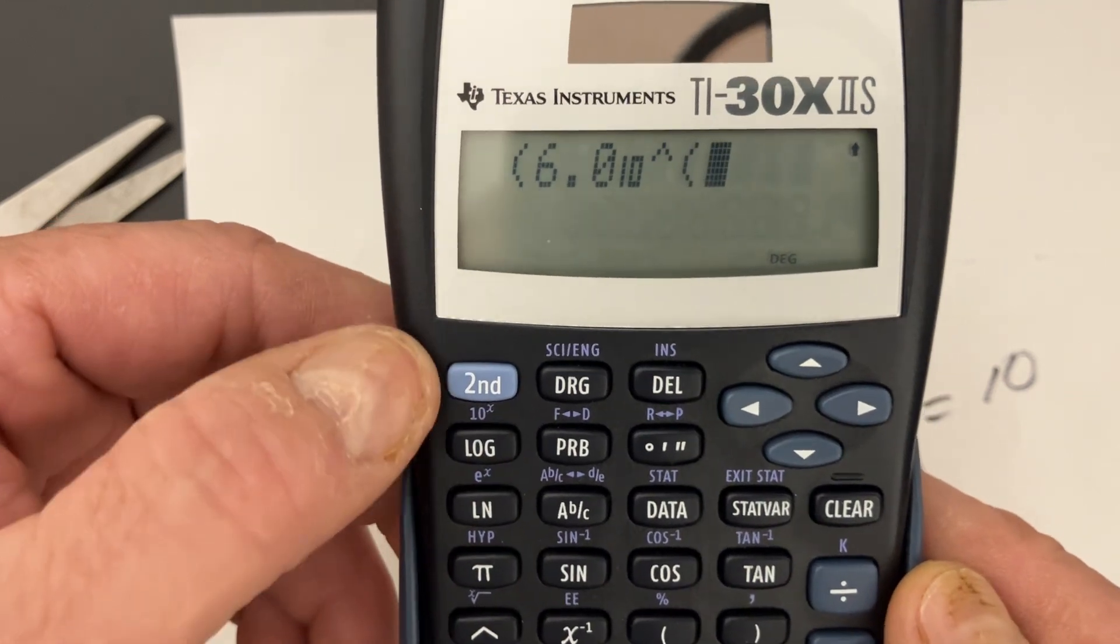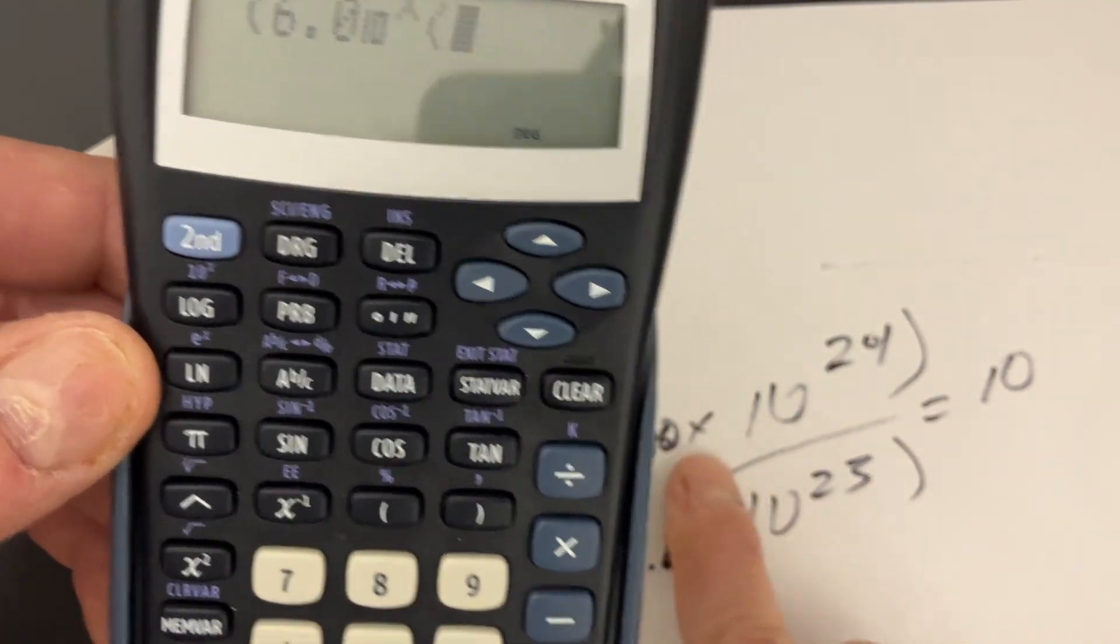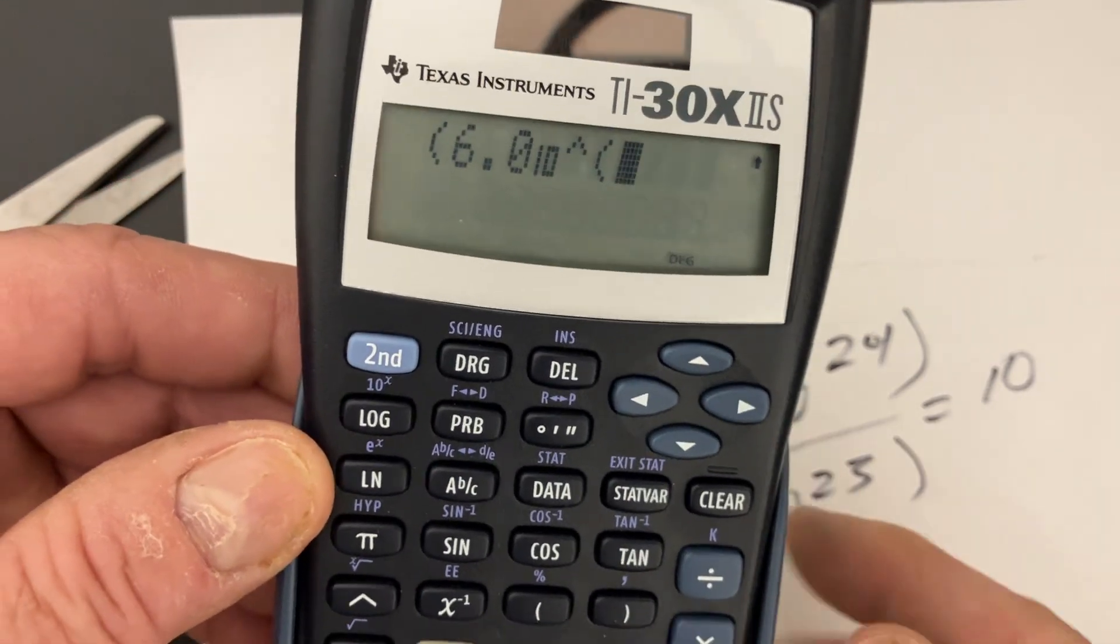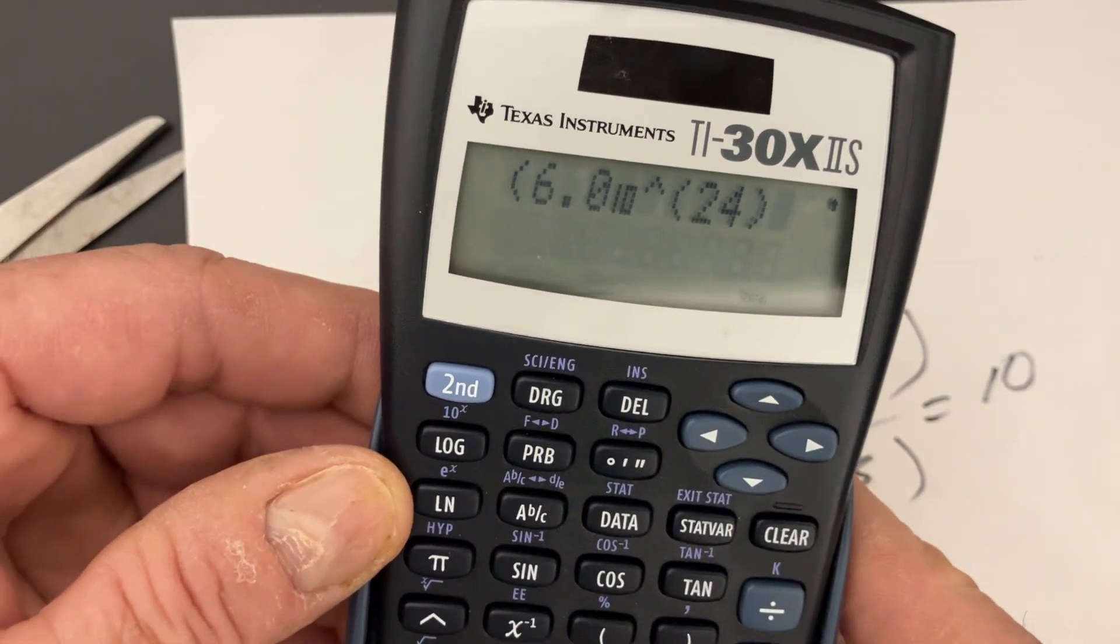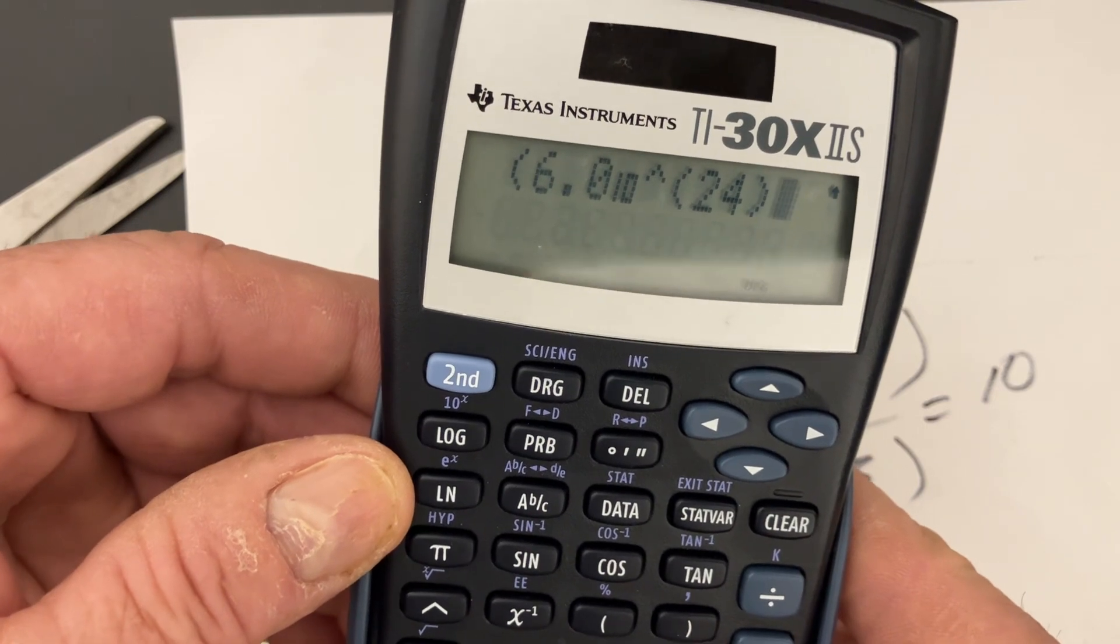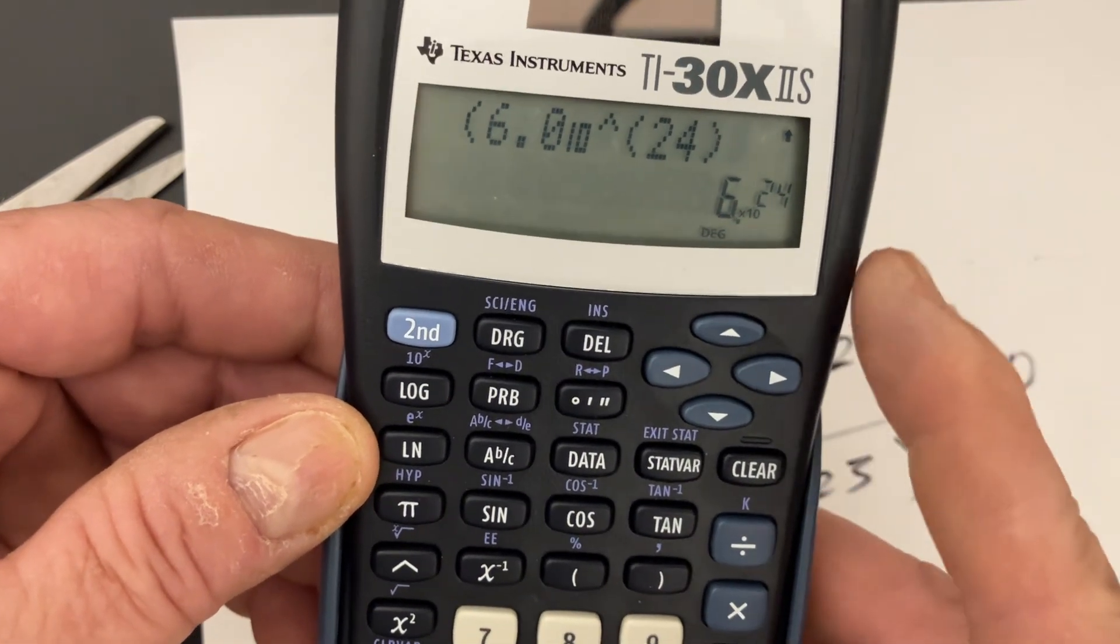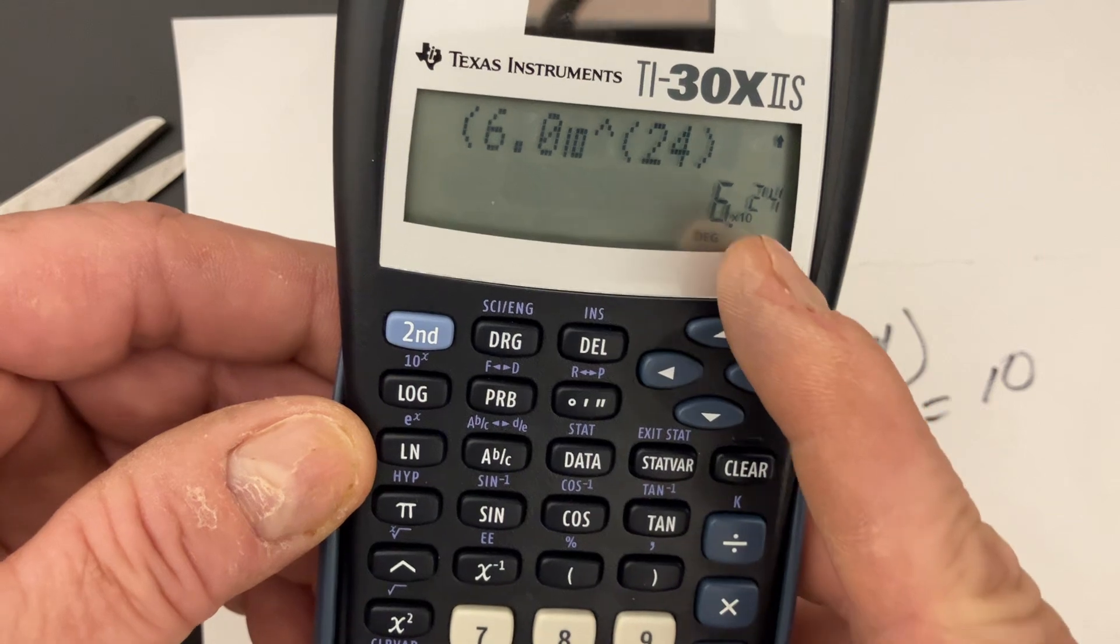I have 10 to the something power, so I'm going to go ahead and put 10 to the 24. And I'm just going to hit equals. And it just gives you 6 to the 24th power.